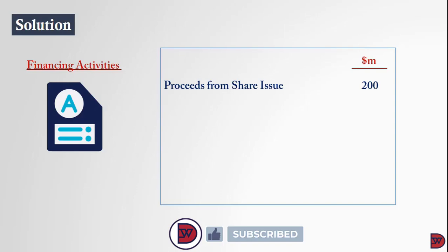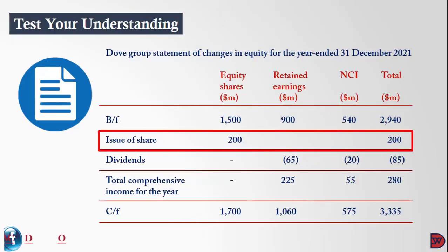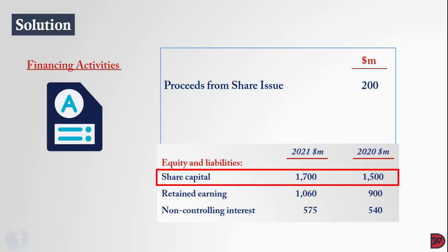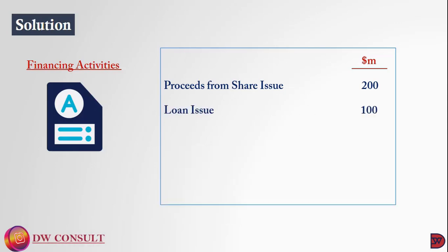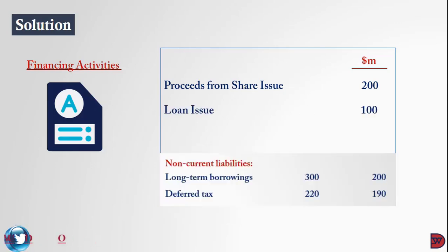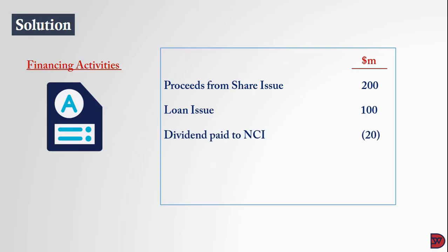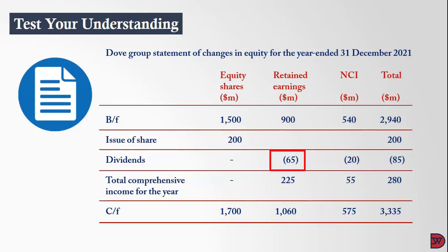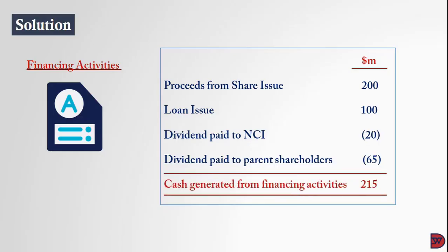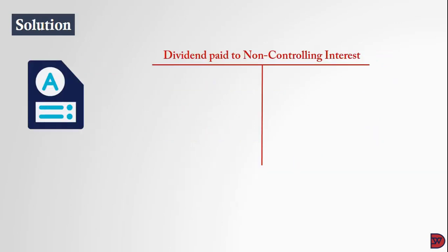For financing activities: proceeds from the share issue are 200 million dollars, as stated in the statement of changes in equity. There was a loan issue of 100 million dollars, found by comparing the prior year borrowings to the current year. Dividend paid to non-controlling interest is 20 million dollars, and dividend paid to parent shareholders is 65 million dollars, both stated in the statement of changes in equity. This leads to cash generated from financing activities of an inflow of 250 million dollars.